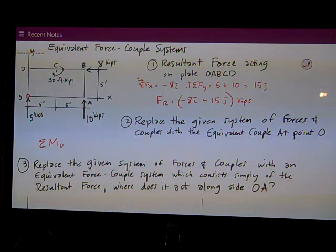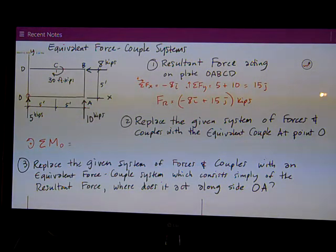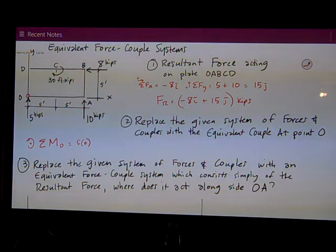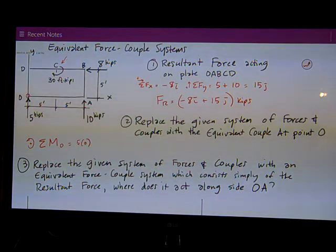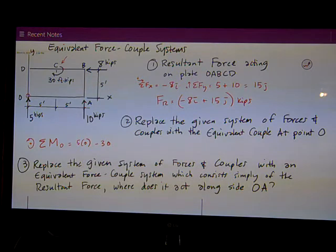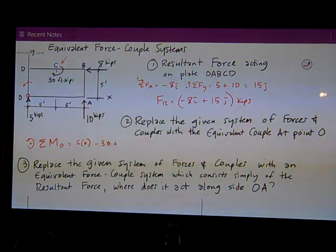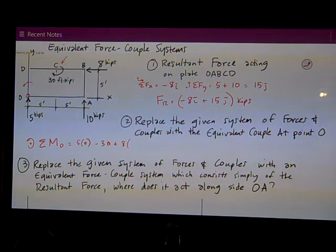I've got to look at it as I'm acting at point O. So it's the sum of the moments about point O. Once again, I'm going to assume counterclockwise is positive. And start over here on the left side. The five kips creates no moment because it intersects it, so it's like five times zero. Then I have this couple acting up here at point C, this 30 foot kips. It's acting clockwise, so it's a negative 30.